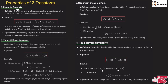The first property is the linearity property. If we take a signal x1(n) multiplied by constant a1, the Z-transform will be x1(z) multiplied by the same constant. Similarly, for x2(n) multiplied by a2, the Z-transform is x2(z) multiplied by a2. The addition of these two signals gives an overall Z-transform that is the addition of the two individual Z-transforms. The significance of this property is that it simplifies the Z-transform of a composite signal by breaking it down into smaller components.